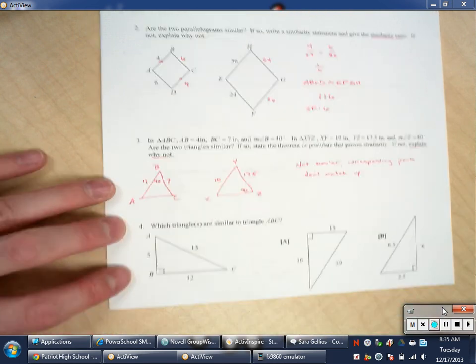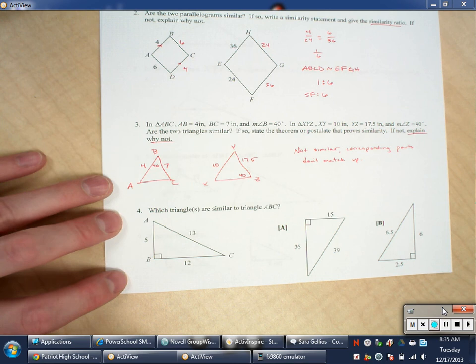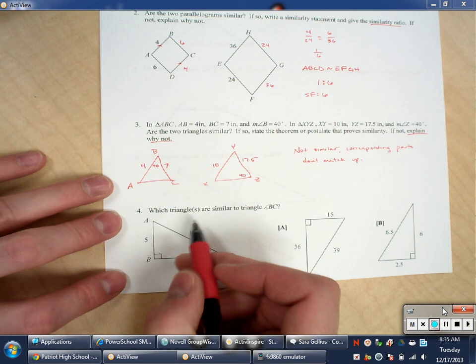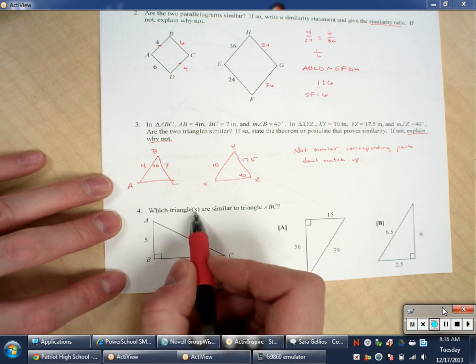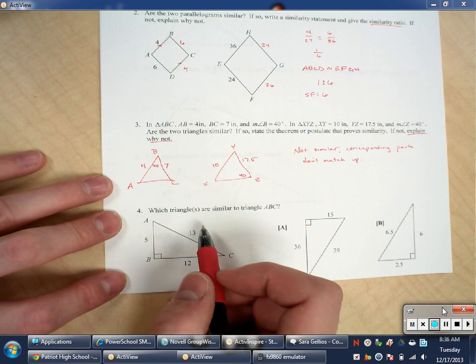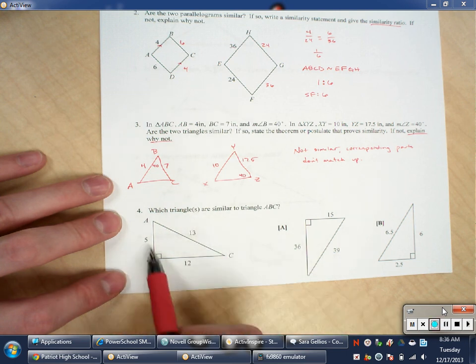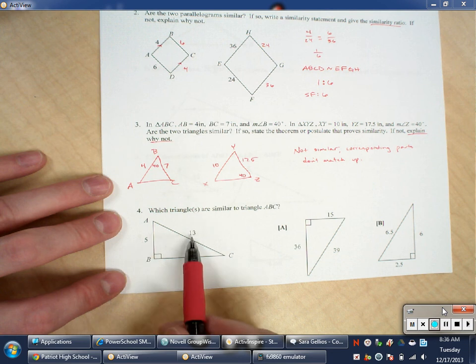Number 4 asks, which triangles are similar to triangle ABC? Because it has S in parentheses, that means that it could be 1 or it could be both. So I'm going to check them both. If I look at the small, I'm going to compare small to small, medium to medium, and large to large. So the small side of this triangle, of the given triangle, is 5. The small side of choice A is 15.